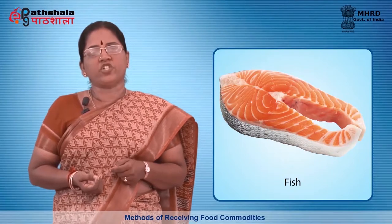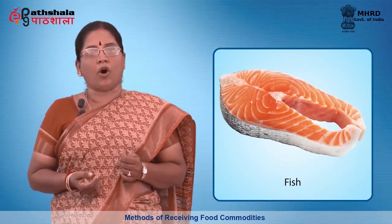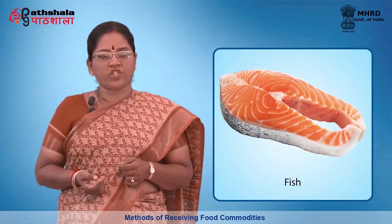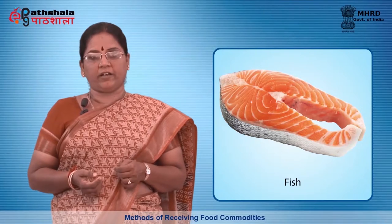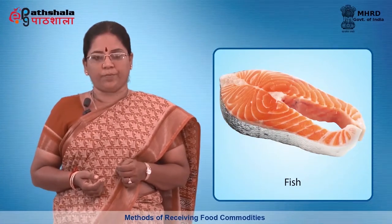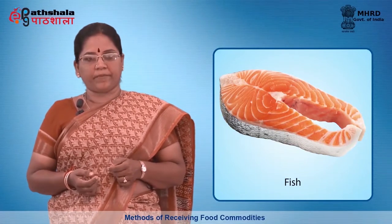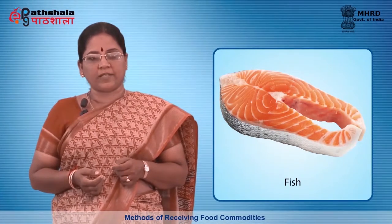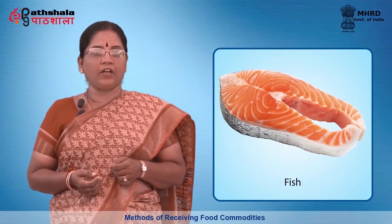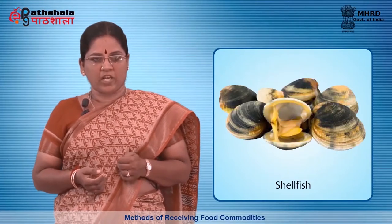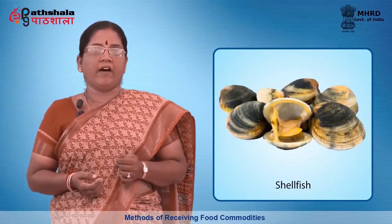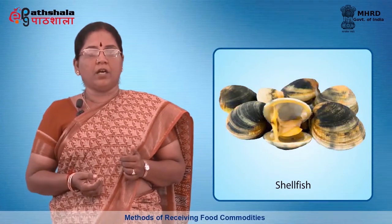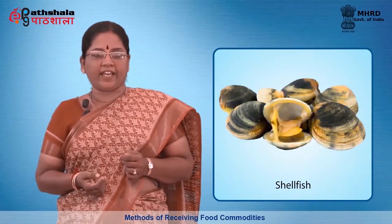Fish should be delivered at 41 degrees Fahrenheit or colder. The eyes should be bright, clear and full. The flesh should be firm and not separating from the bones. The gills should be reddish-pink with no slime. The scales should be bright coloured, glossy and adhering to the skin. It should not have any off-odours. Shellfish should be delivered at 45 degrees Fahrenheit or 7 degrees Celsius or colder. They should be delivered with their shells intact and clean.